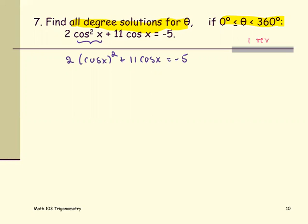The equation involving cosine function cosine x, we're gonna let the notation, let y be cosine x. The equation becomes 2 times y squared plus 11 times y equals negative 5.